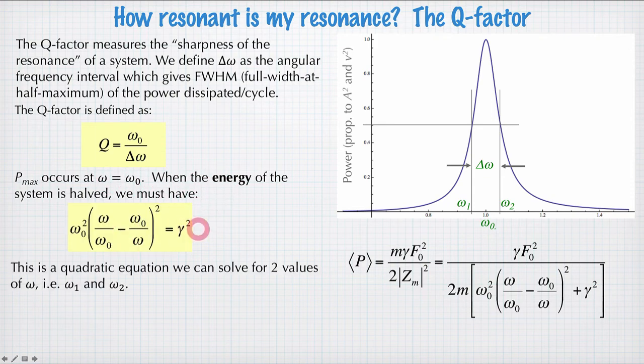So it's this term here, must be equal to this term here, and that is when the power dissipated is exactly half of the maximum. Because at maximum, this term here disappears completely, and we just have this numerator here divided by γ². And so when this part here equals γ², then we've reduced the power dissipated by a factor of 2.